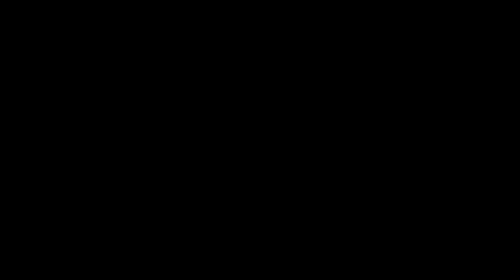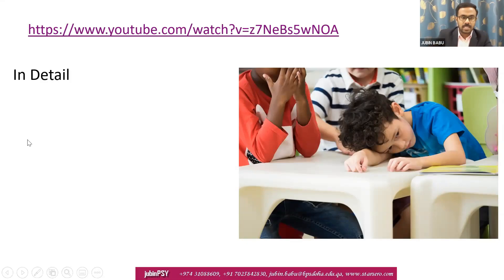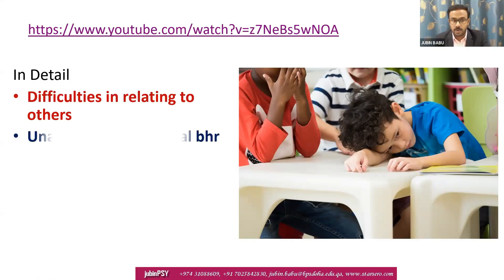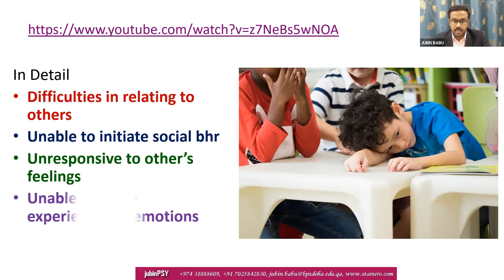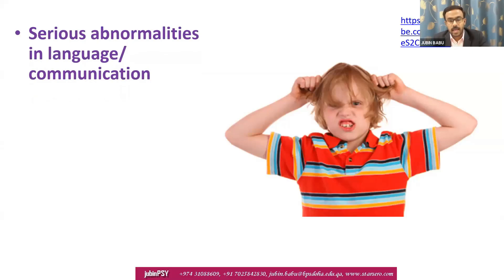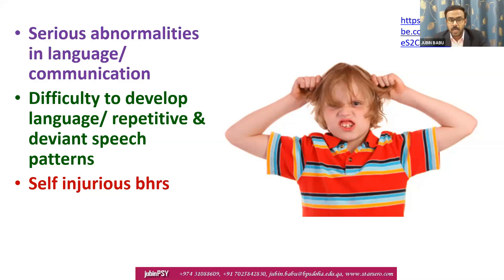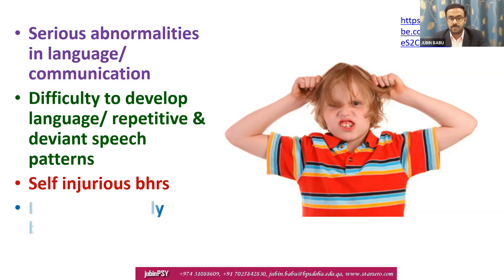Problems with food textures, clothing, etc. are also seen. They have difficulties in relating to others, are unable to initiate social behavior or communication, are unresponsive to others' feelings, and are unable to share experiences or emotions with other people. Serious abnormalities in language and communication may be present, including difficulty developing language, repetitive and deviant speech patterns, self-injurious behaviors, and IQ approximately below 70.